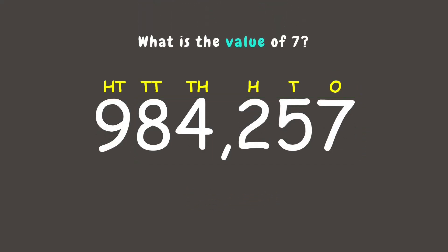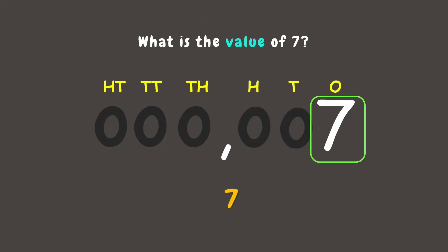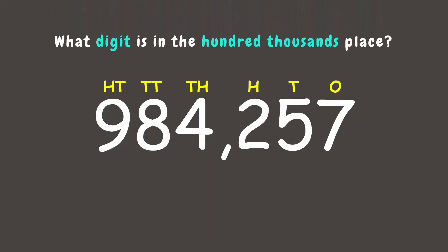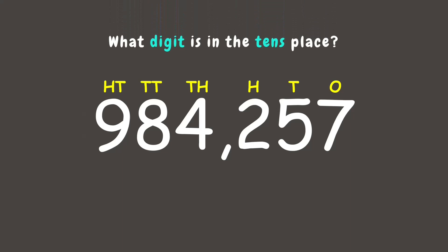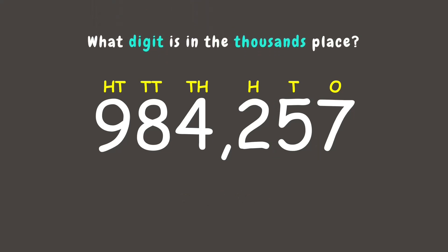Next, what is the value of seven? It is seven, since seven times one is seven. Now, can you tell me what digit is in the hundred-thousands place? It is nine. Now what digit is in the tens place? If you said five, you got it correctly. Now what digit is in the thousands place? It is four.